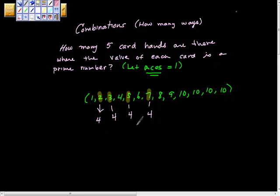So how many cards are there whose face value is a prime number? Well, there are 16, so we want to choose from those 16 cards, and we want five cards at a time. So how many ways? The combination of 16 choose 5.